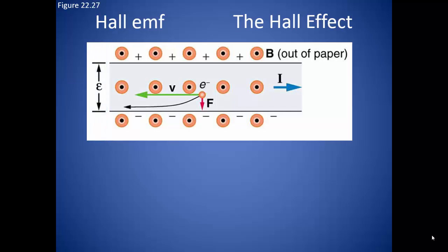This voltage is known as the Hall EMF. So the Hall effect is simply the creation of a voltage across a current carrying conductor by a magnetic field.